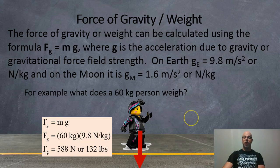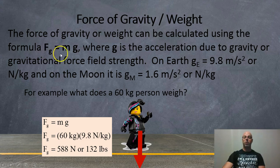The force of gravity or weight can be calculated using the following formula. Weight equals mass times g, where g is the acceleration due to gravity, or the gravitational force field strength. On earth, g is around 9.8, and on the moon, it's around 1.6. So, for example, this 60 kilo person, what do they weigh on the earth? 60 kilos times 9.8 newtons per kilo, or meters per second squared, is 588 newtons. Or, if you want the pounds, use 2.2 instead of 9.8. 60 times 2.2, 132 pounds.